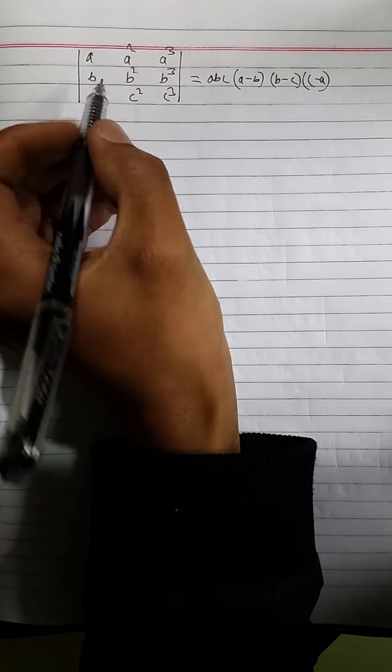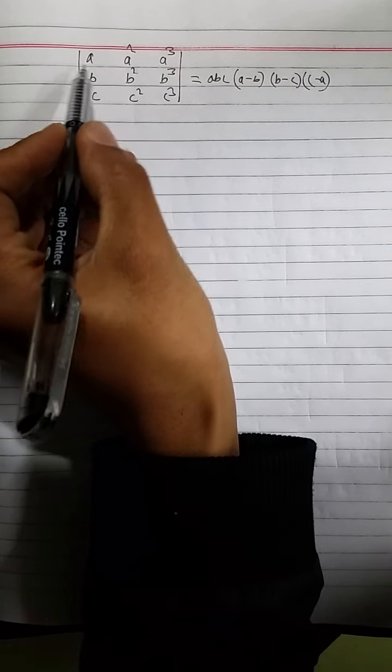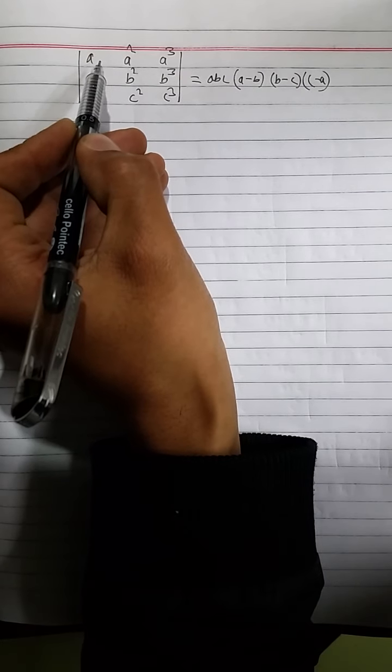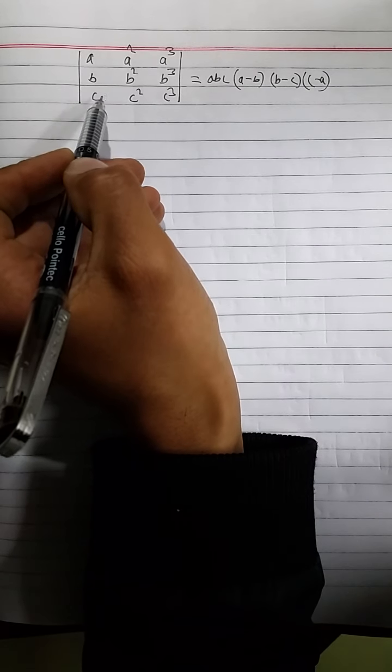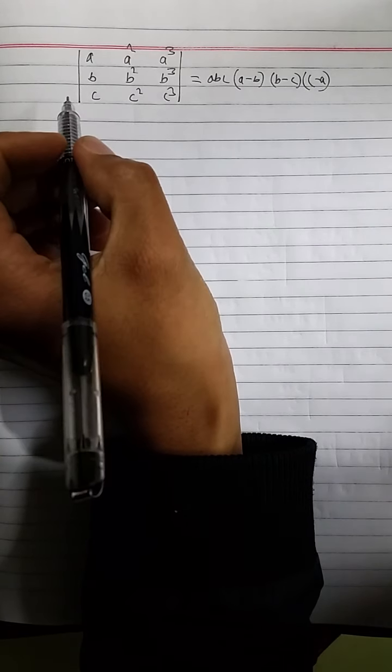But it should be common only in a particular row or column. Likewise, you can see that in first row A is common, and similarly second and third row consists B and C respectively.